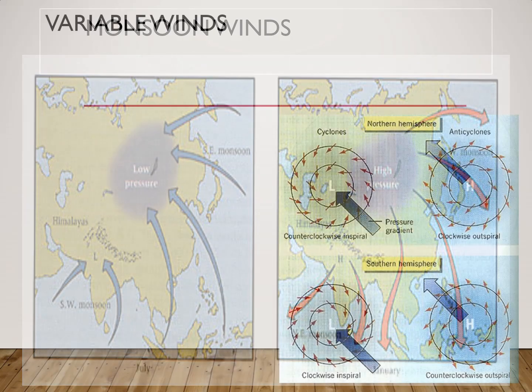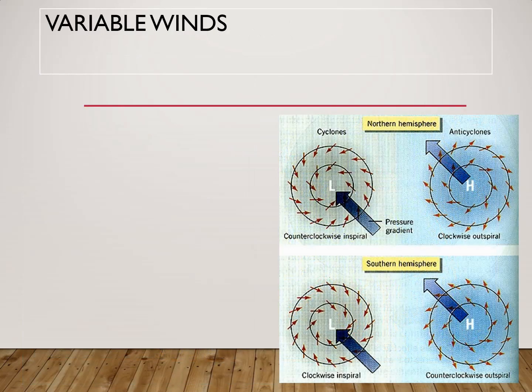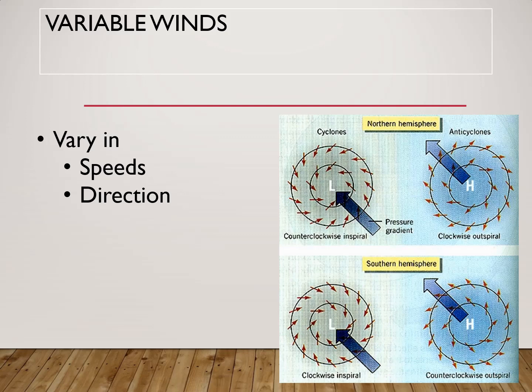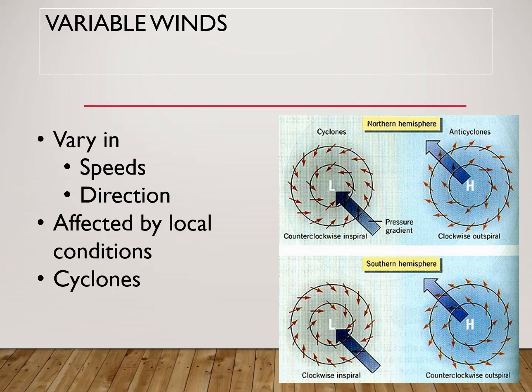Variable winds are those winds which vary in speed and direction — they can be very fast, they can be moderate, they can move from any direction or towards any direction. These variable winds are generally affected by local conditions of temperature. Variable winds include cyclones and anticyclones, which we will be studying in subsequent slides.